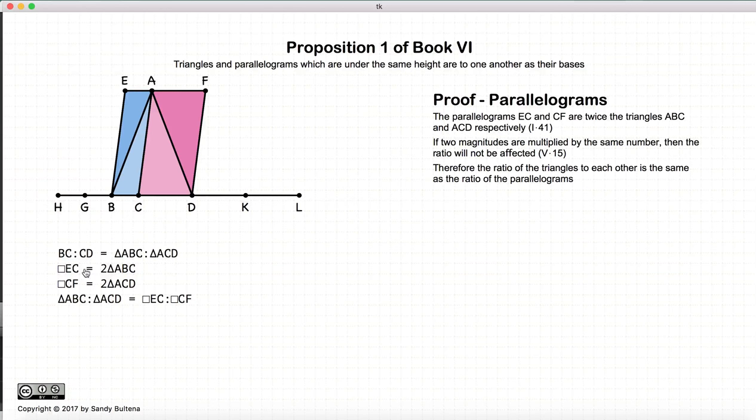But since EC and CF are the same multiple of the triangles, respective triangles, this does not impact the ratio between the two. Proposition 15 of book five. So the ratio of ABC to ACD will also be equal to the ratio of EC to CF.